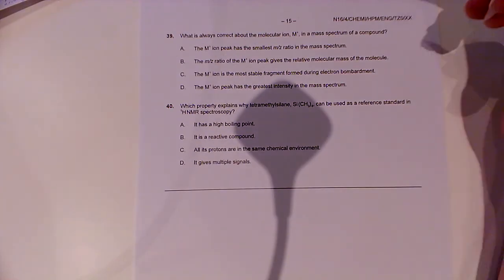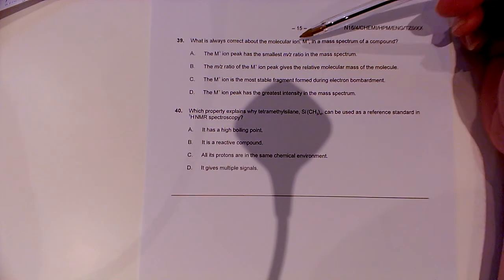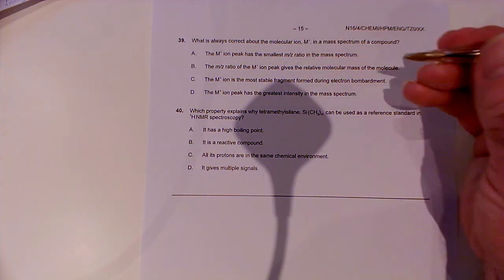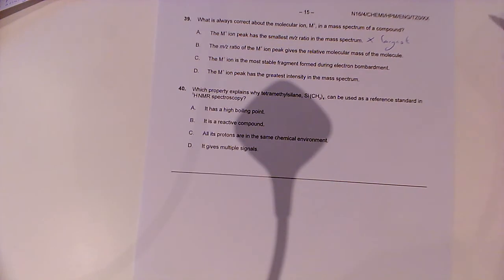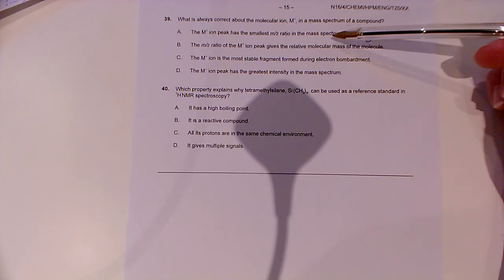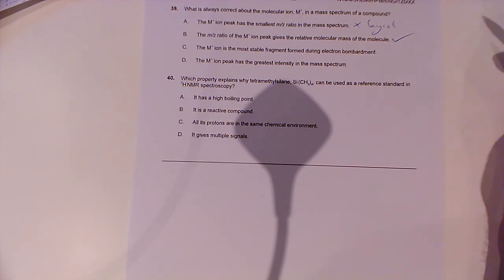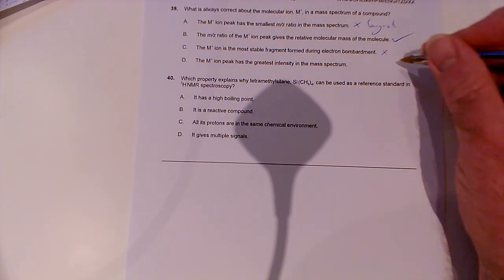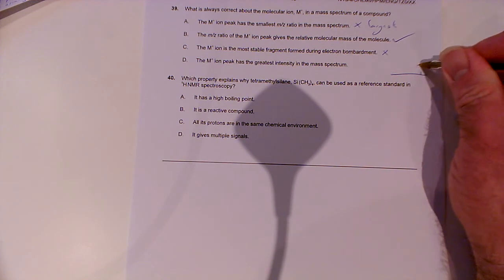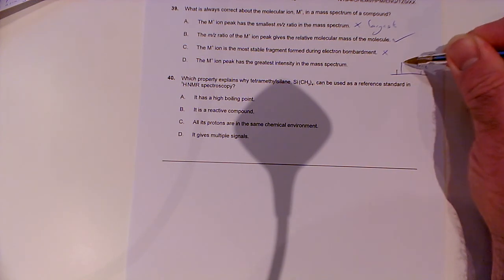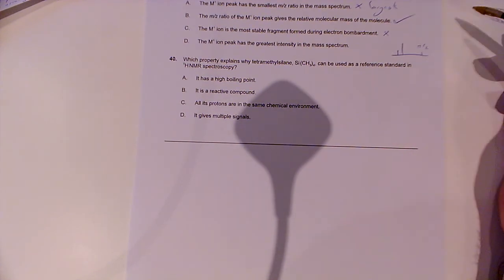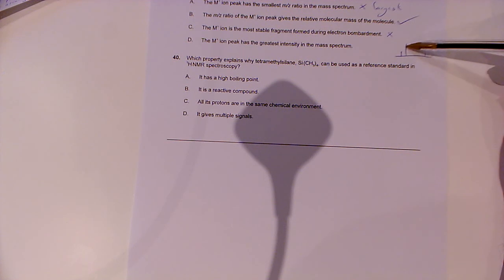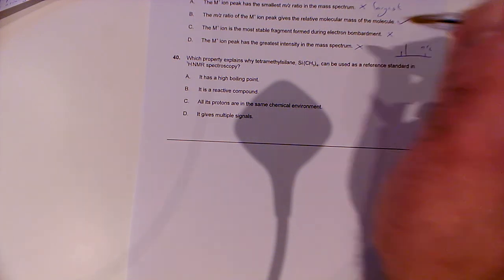And then the last two, number 39. A bit of spectroscopy. What is always correct about the molecular ion, M+, in a mass spectrum of a compound? The M+ ion peak has the smallest mass to charge ratio. Well, no, it should be the largest because it's the whole molecule. The mass to charge ratio of the M+ ion peak gives the relative molecular mass of the molecule, and that sounds good to me. The M+ ion is the most stable fragment formed during electron bombardment. Not necessarily. When you get your mass spec, the M/Z one is going to be the one which is furthest to the right, but you might have all sorts of other fragments in there which actually have a higher abundance and are more stable. And then the M+ ion peak has the greatest intensity. Well, that would support this one, because the taller they are, the more stable they are. So again, it's not this one, so we're looking for B.